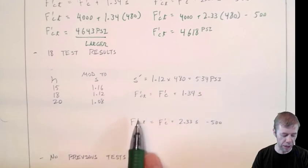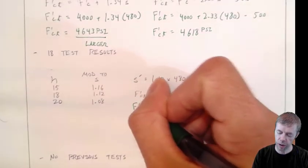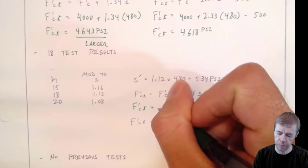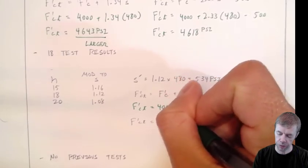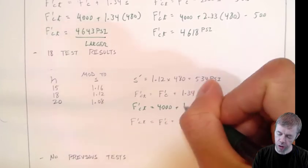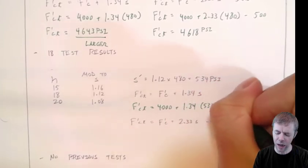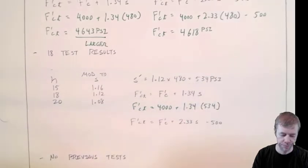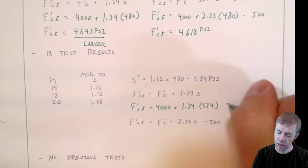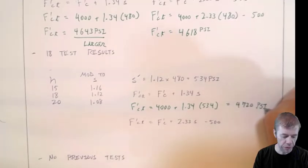Now, I get to do everything again with my new modification factor. F'CT with my new standard deviation. 4,000 plus 1.34 times 534. Why did I need a larger one? It's because I didn't have 30 tests. And that's 4,720 psi.